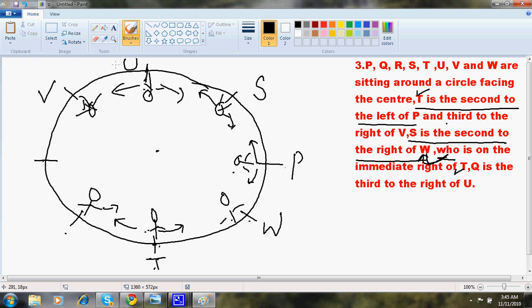So Q is third to the right of U. One, two, three. Here is my Q. Now all places are filled except one. So P, read the question. P, Q, R. R is missing. So here is R. That's it.